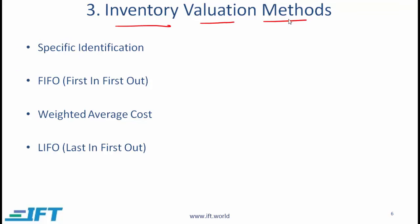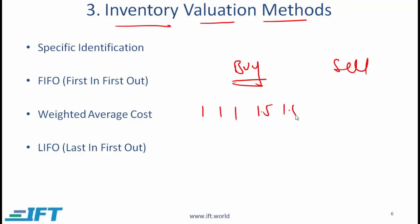Coming now to inventory valuation methods. The different methods are: specific identification, FIFO, weighted average cost, and last in first out. To set the context: say you are a trading company, you buy your goods, store them, and then sell. When you buy, the buying price is not always the same — you might buy an initial batch for $1 per item and then a second batch for $1.50 per item. Now if you sell two items, the question is what cost should you use? The decision depends on which valuation method is used.